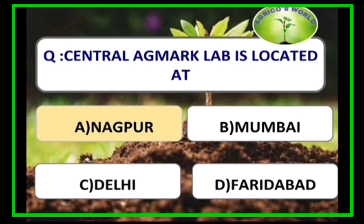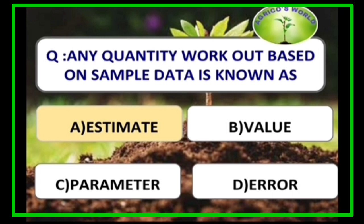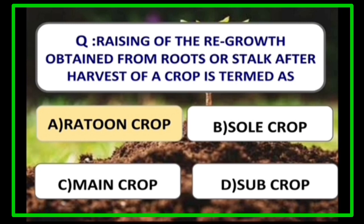Central Agmark laboratory is located at Nagpur. Any quantity worked out based on sample data is known as an estimate. Raising of regrowth obtained from the roots or stock after harvest of a crop is termed a ratoon crop. Ratooning is mostly followed in sugarcane, and only one ratooning is recommended.